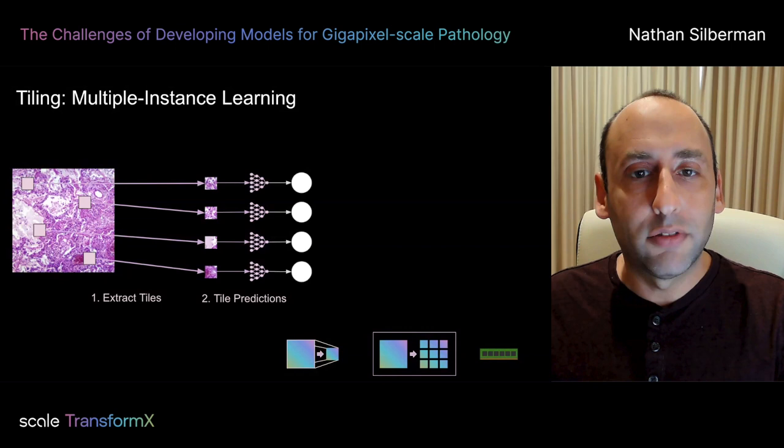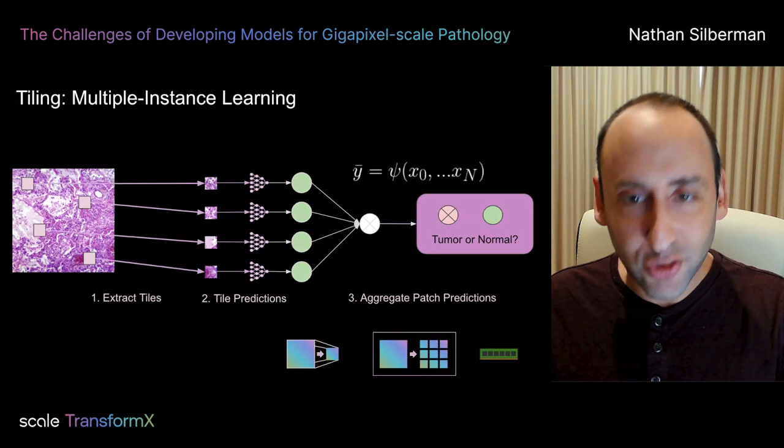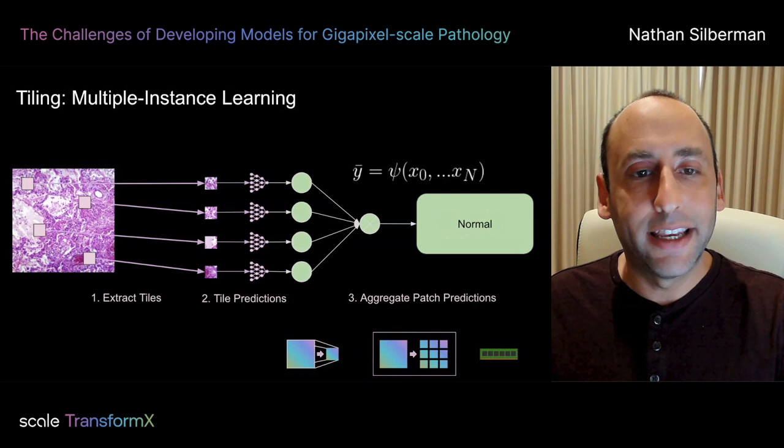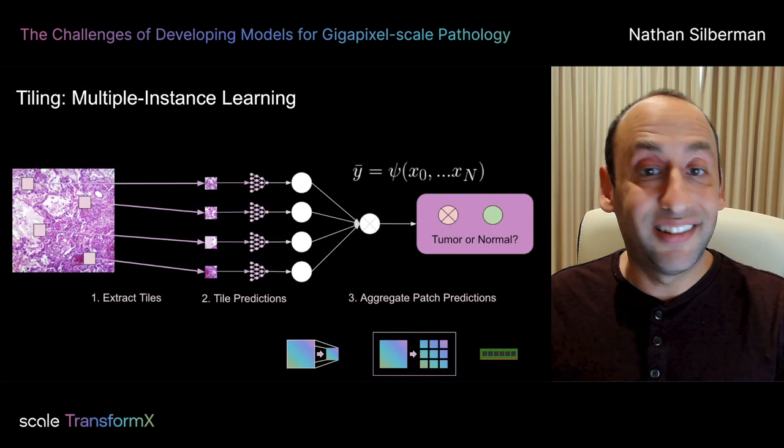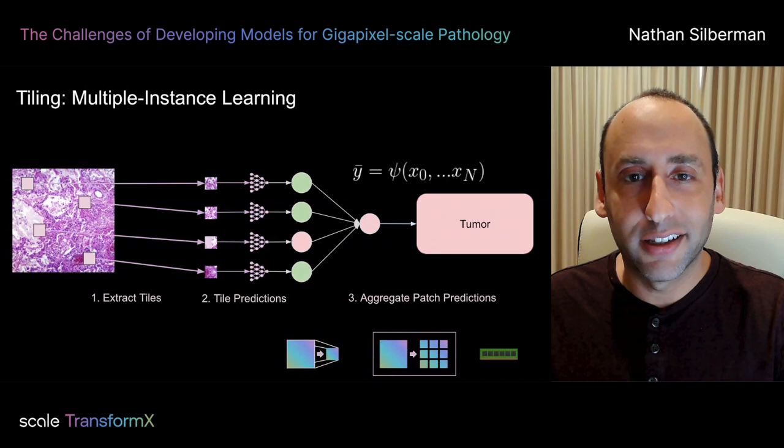To see how this works in practice, imagine that our model predicts that each tile has a low probability of a tumor — i.e., it's normal. In this case, the max aggregate function would determine that the entire slide or patient is normal. Conversely, imagine that our model believes a single tile has a high probability of being a tumor. In this case, the max aggregate function would determine that the slide or patient is abnormal or contains a tumor. So that works as we would hope.